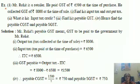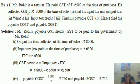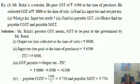Let us study some problems based on this. Mr. Rohit is a retailer. He paid GST of Rs. 6500 at the time of purchase and collected GST of Rs. 8000 at the time of sale. Find his input tax and output tax, what is his input tax credit, find his payable GST, and hence find the payable CGST and SGST.